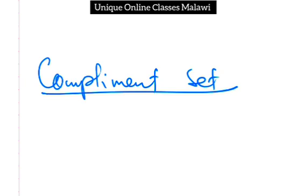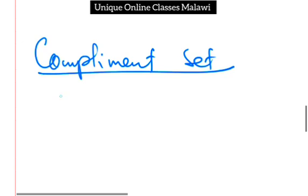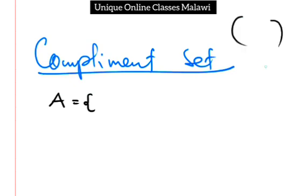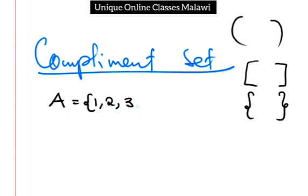Let's have an example here. The current set A — remember, we use these kinds of brackets. So set A equals 1, 2, 3, 6, 8, 12.